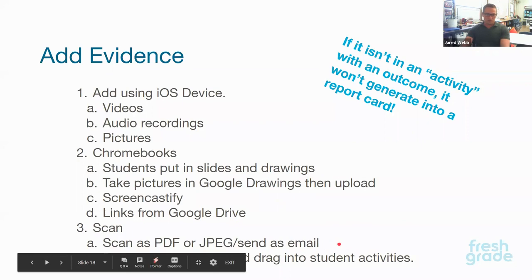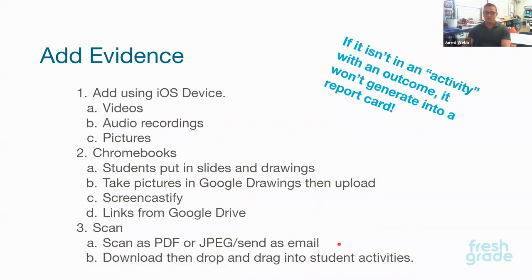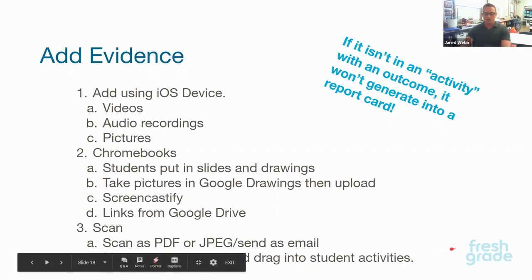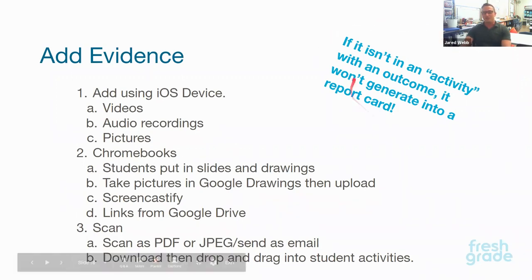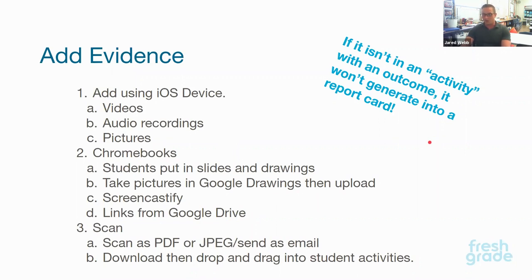Another great one is to scan work in on our photocopier and then just email it to myself. Then I just have all the files — you can do it as a PDF or a JPEG and drag and drop it right into that kid's activity and mark it on the spot. This is really quick and easy for bigger writing assignments. I put this note here because this is something we always have to remember: if it isn't an activity with an outcome, it won't generate into a report card. It needs to be an activity, and you have to have that outcome with the subject, the unit, and the actual outcome in there.